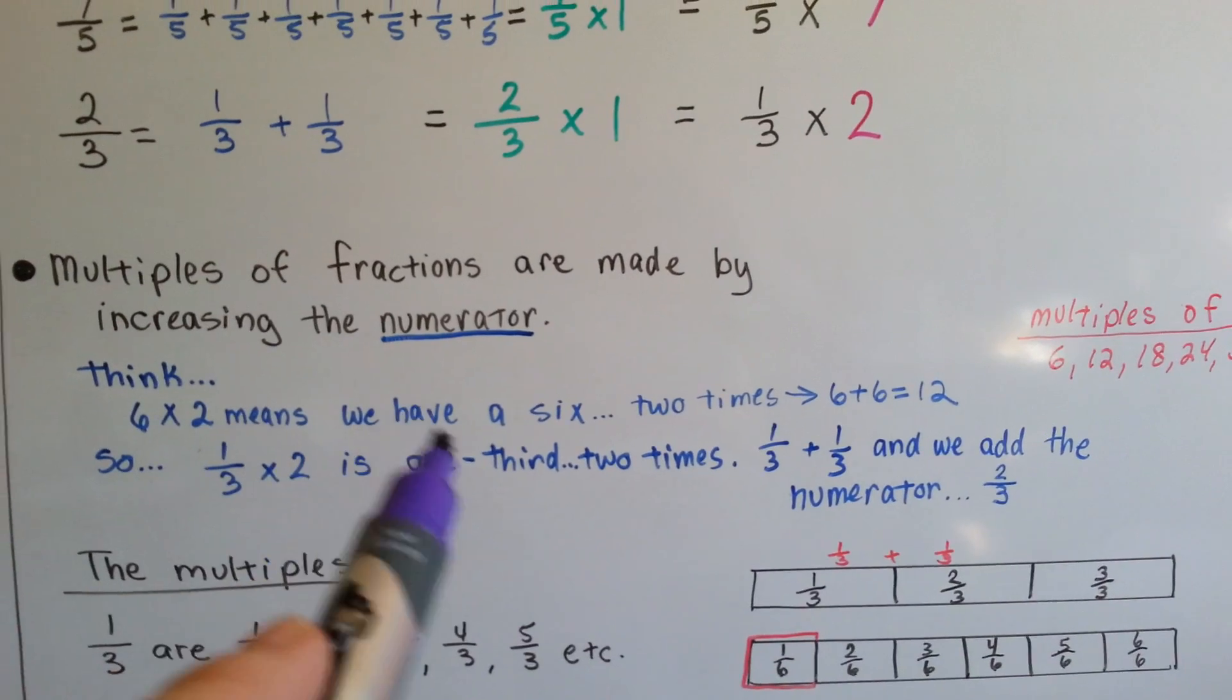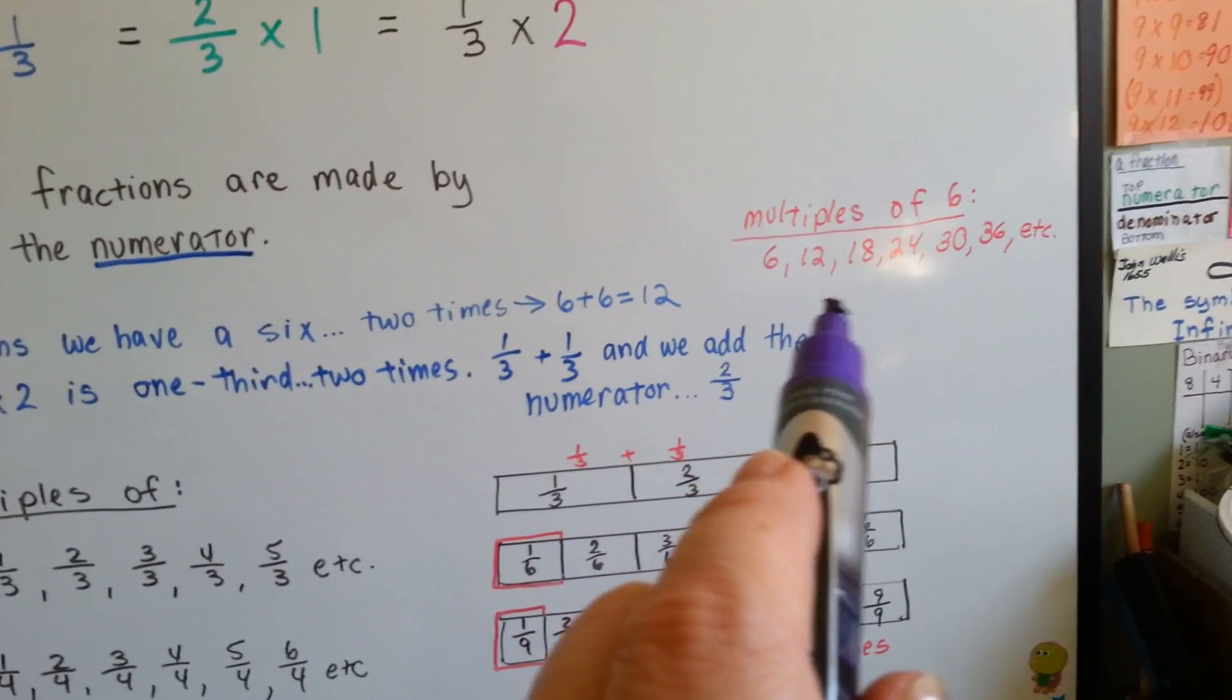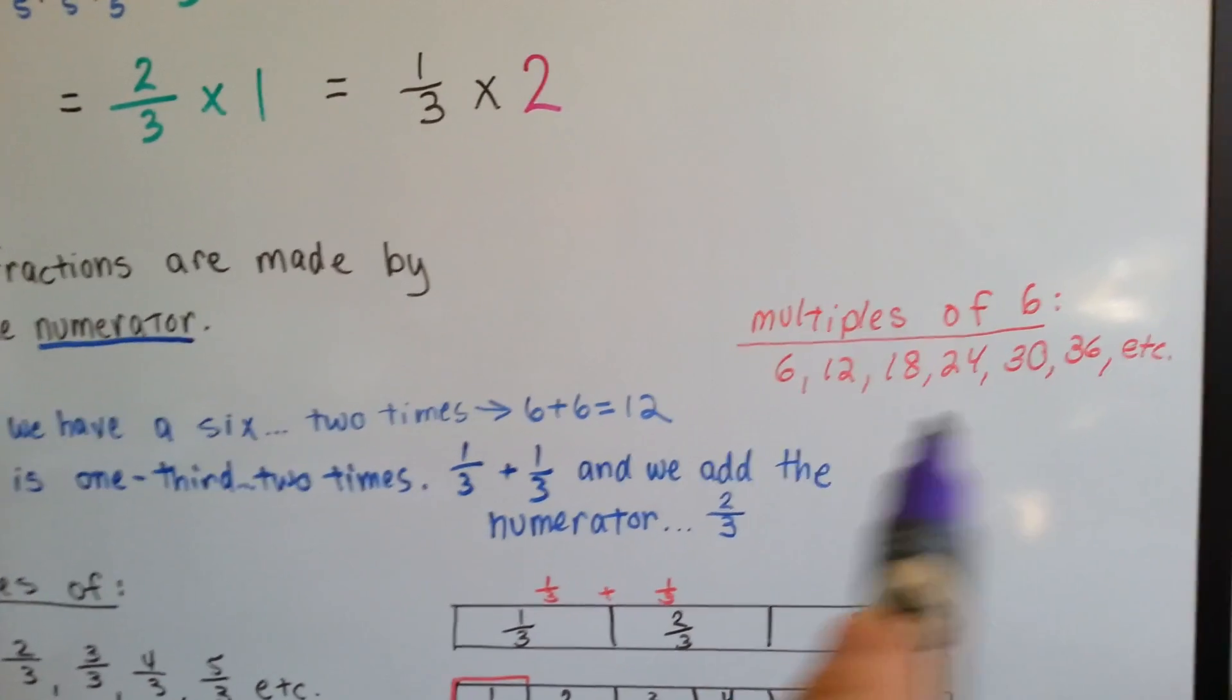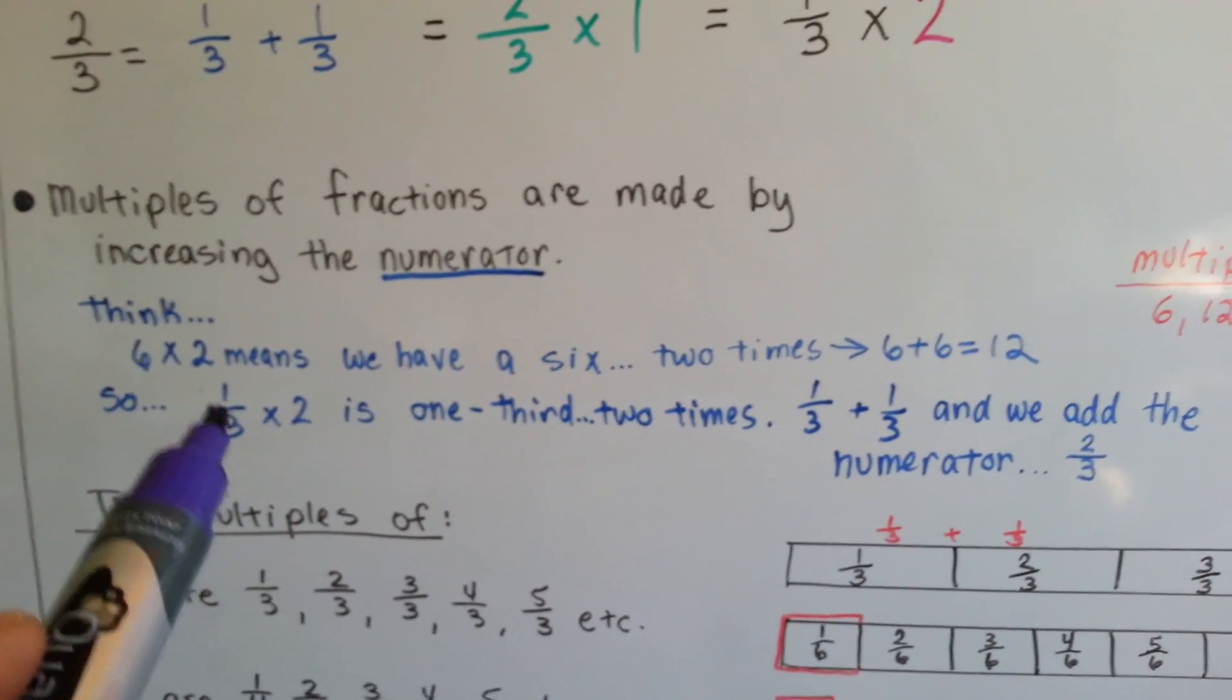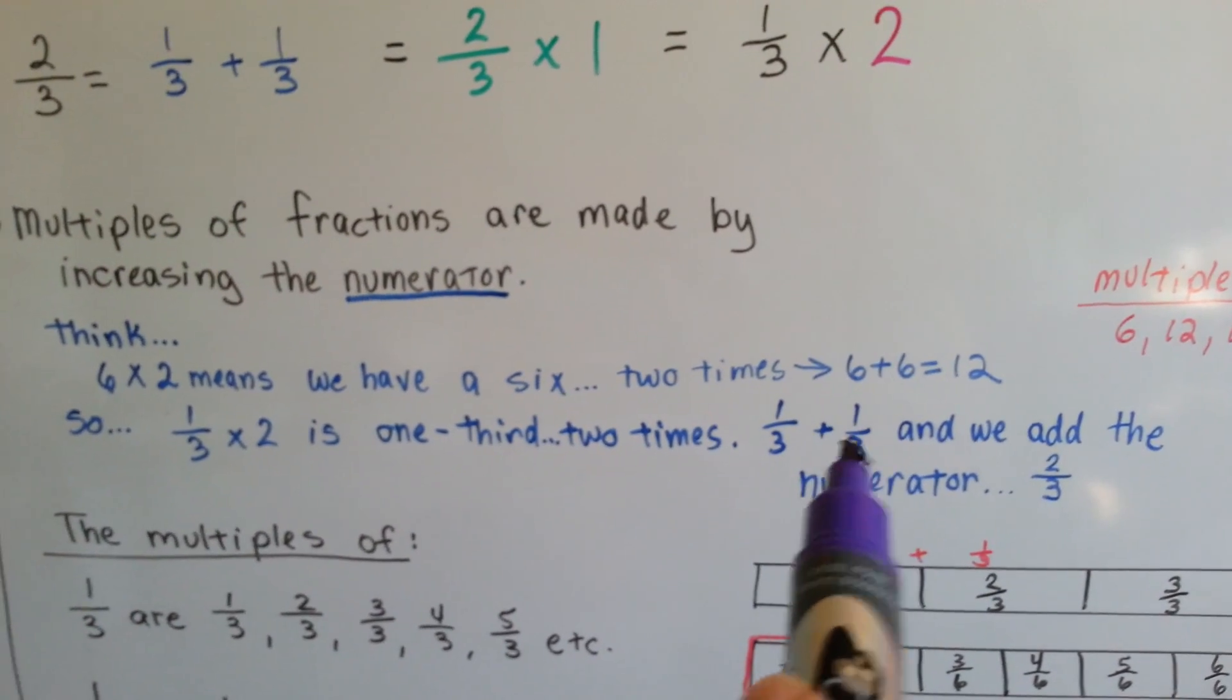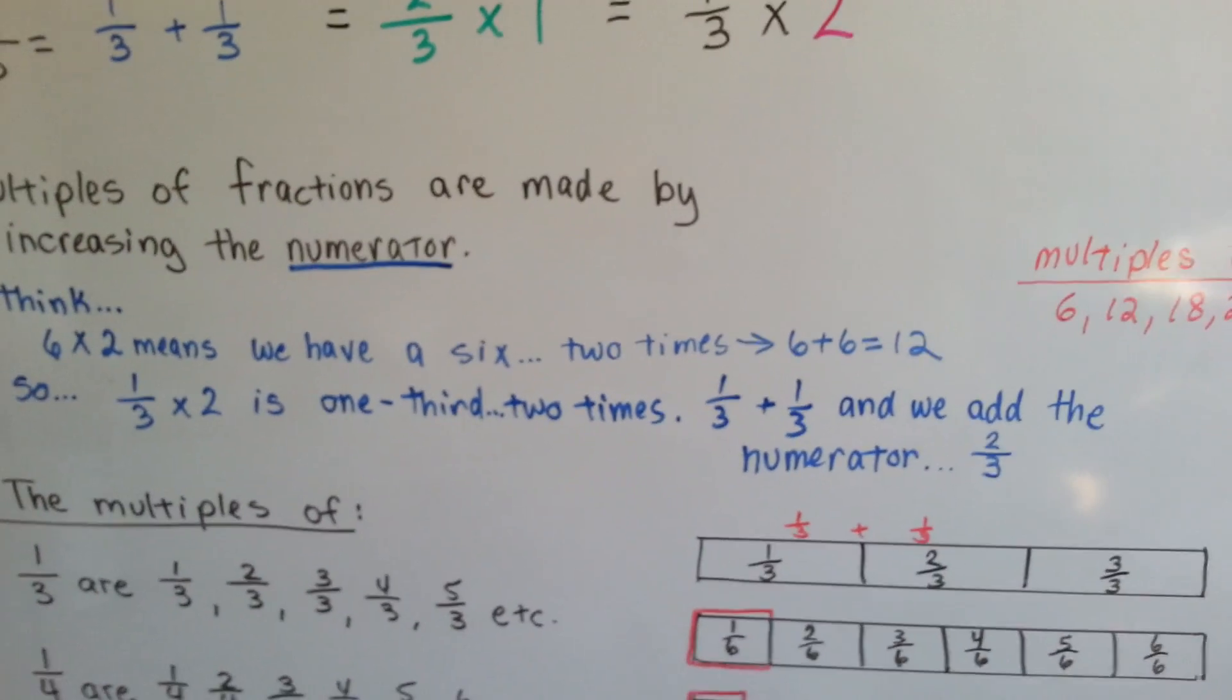When we increased the 1 third and another 1 third, it became 2 thirds. 6 times 2 means we have a 6 2 times. Right? 6 plus 6. Here's the multiples of 6. 6, 12, 18, 24, 30. So 6 times 2 is 12. These are the multiples. See how a 6 is added each time? So if we did this with fractions, 1 third times 2, if we were to stick with the 6 times 2 kind of rule, it would be 1 third plus 1 third. Like 6 plus 6. And then we just add the numerator and we get 2 thirds. The denominator did not get touched.